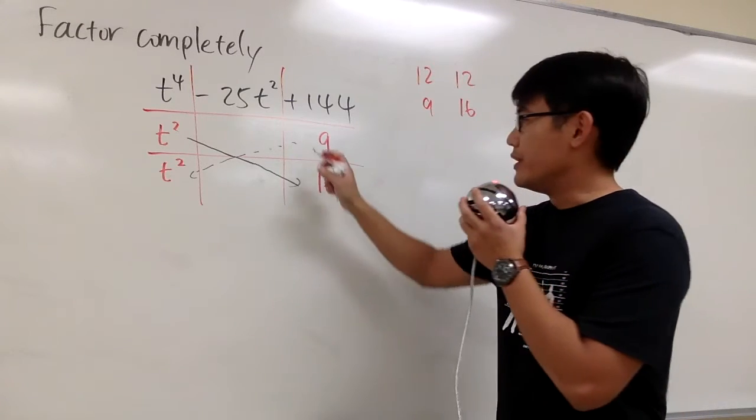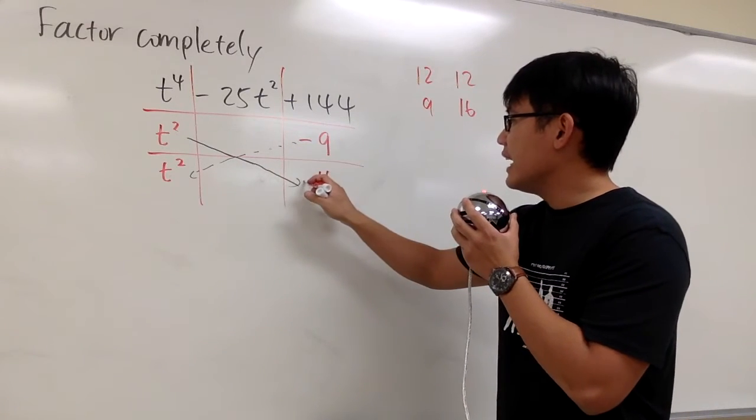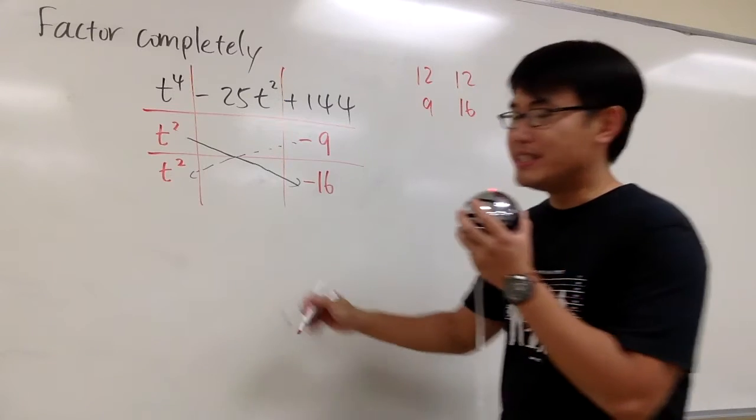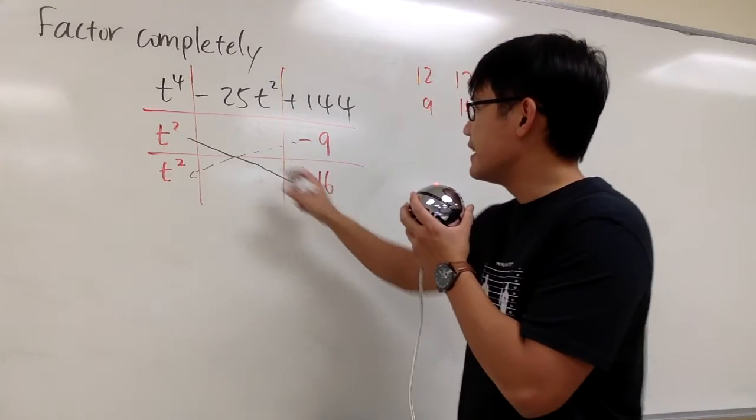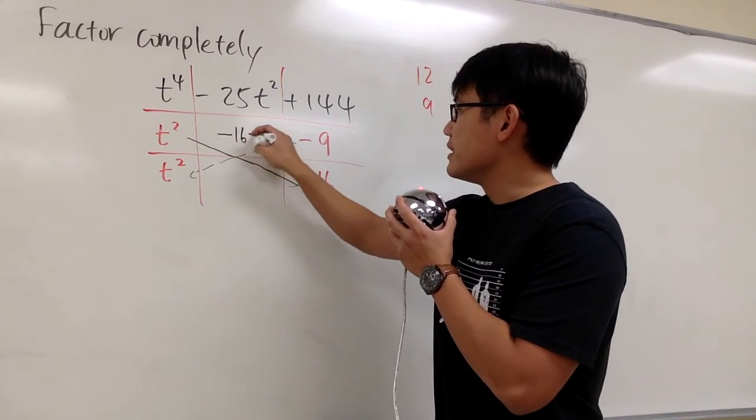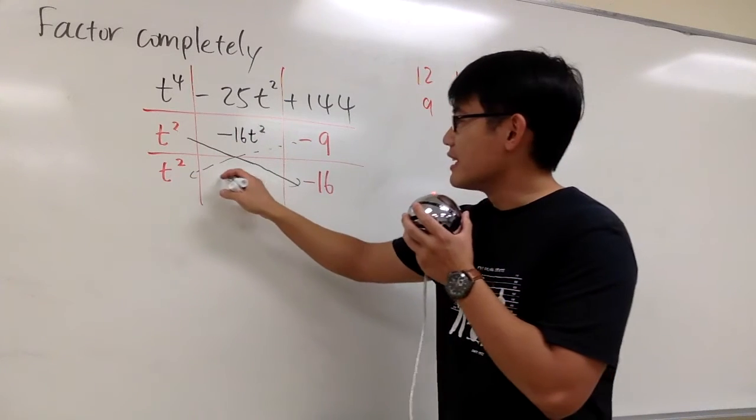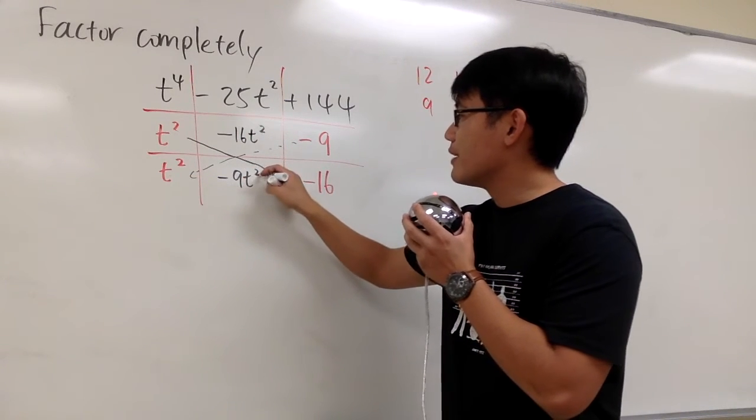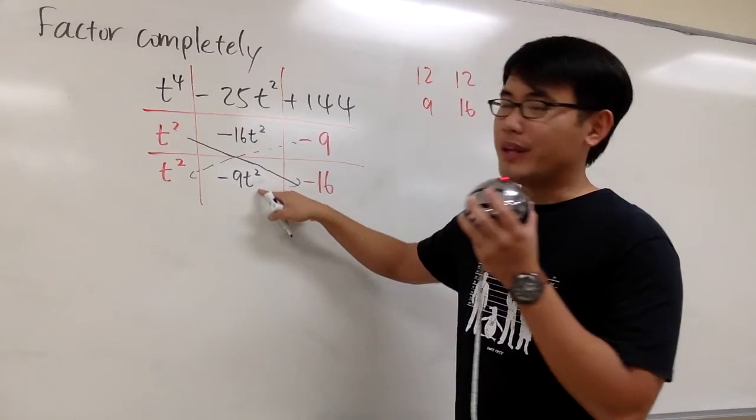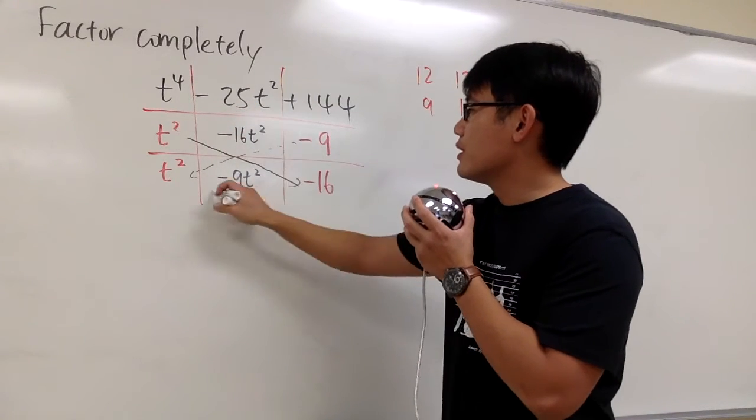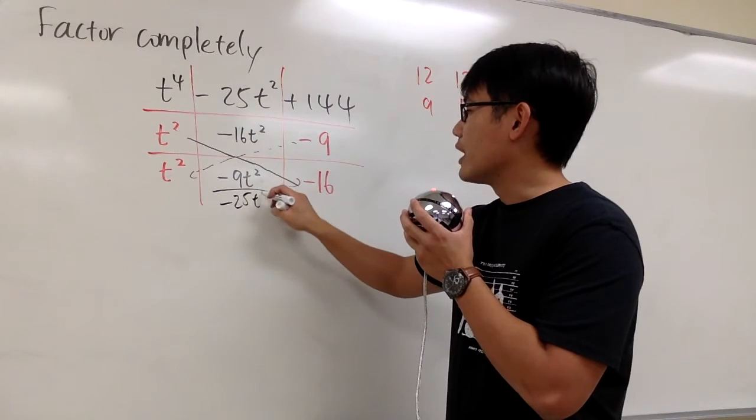But as we saw earlier, we technically need negative 9 and negative 16. Because we see, t squared times negative 16, that will give us negative 16t squared. And then negative 9 times t squared, that will give us negative 9t squared. These two together, we get negative 25t squared. So we see that we got our right choice.